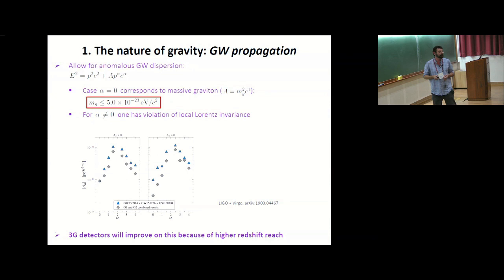Here's another example of a mostly model independent test. Here we look at gravitational wave propagation. What you do here is you allow for an anomalous gravitational wave dispersion relation, so the graviton would satisfy e squared is p squared c squared, but you can introduce this extra term here, which goes like momentum to some power alpha, and this pre-factor a gives you the strength of the violation.